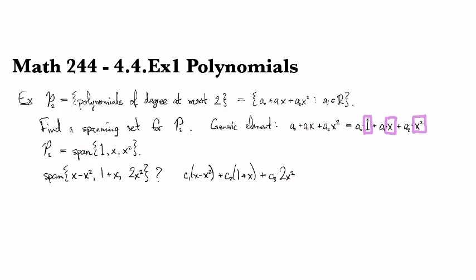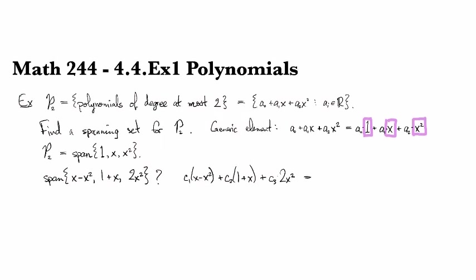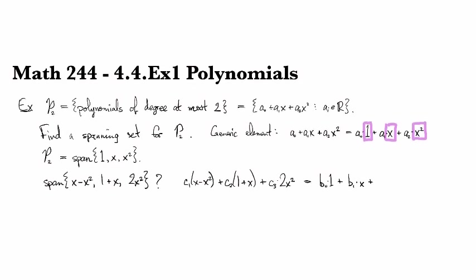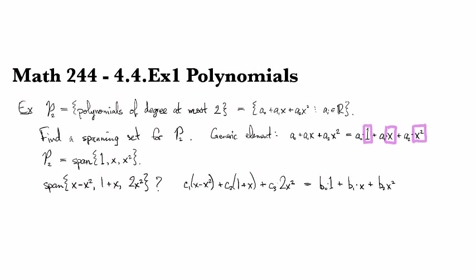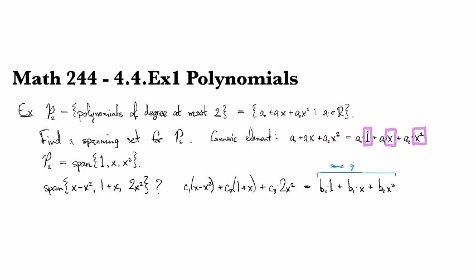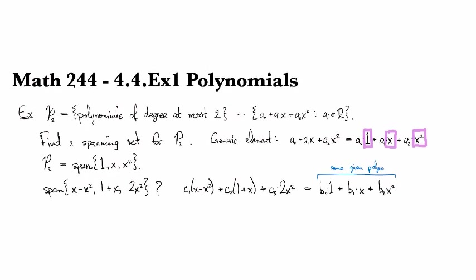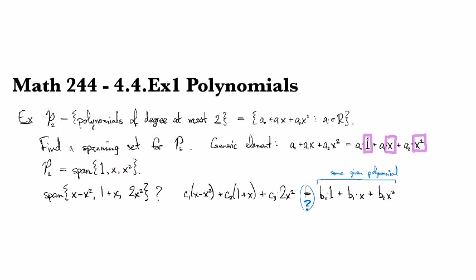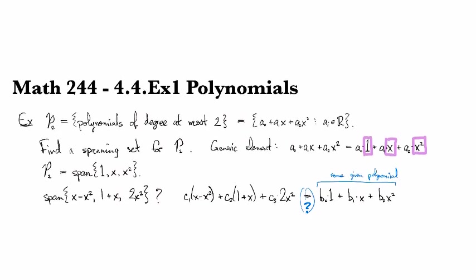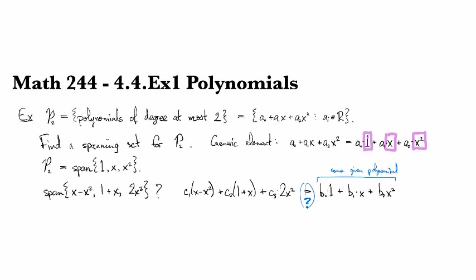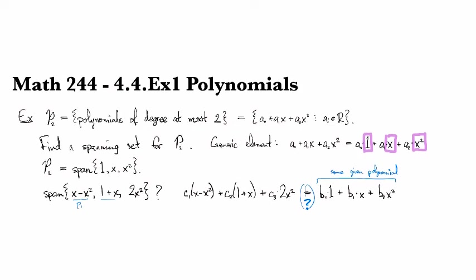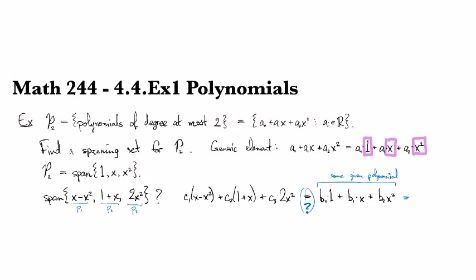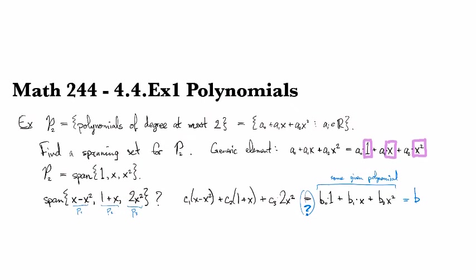Plus c3 times 2x squared. Can I find coefficients like that which will give me a given polynomial? So, here the idea is that this is some given polynomial. So, by asking whether or not I can solve this equation right here, I'm asking is it possible to write a given polynomial as a linear combination of these three? Maybe we'll give them names just to make it convenient. So we'll call this first one p1 and the second one p2 and the third one p3. So is my polynomial b here in the span of p1, p2, and p3? That's the question we're trying to solve.